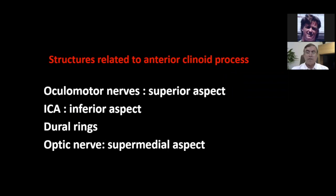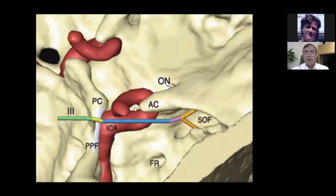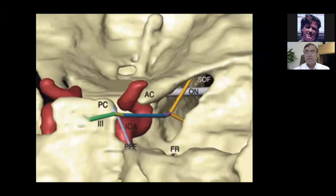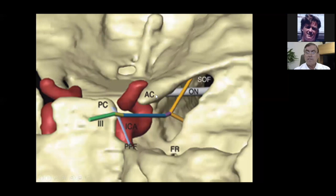The anterior clinoid is related to so many important neurovascular structures, including the oculomotor nerve, which is on the inferior aspect. The carotid is on the anterior aspect of the anterior clinoid. The optic nerve is in the superior medial aspect. The third nerve in its segments going into the superior orbital fissure passes underneath the anterior clinoid, so the anterior clinoid is superior to the third nerve.